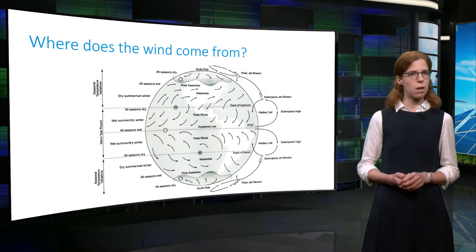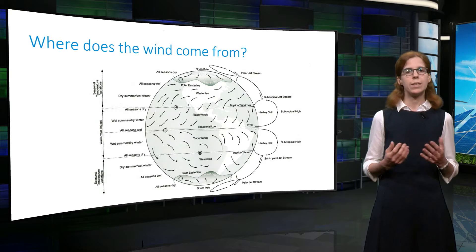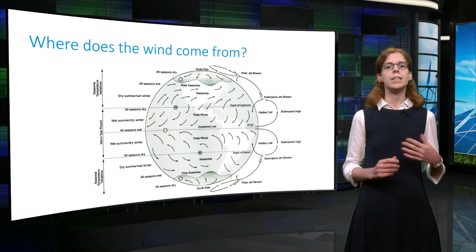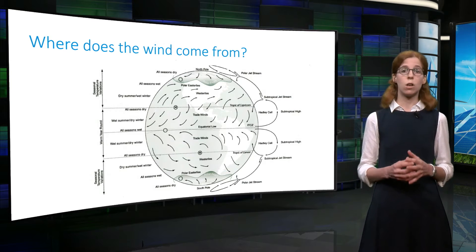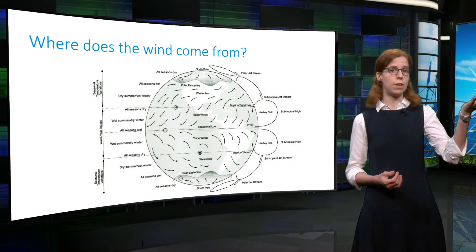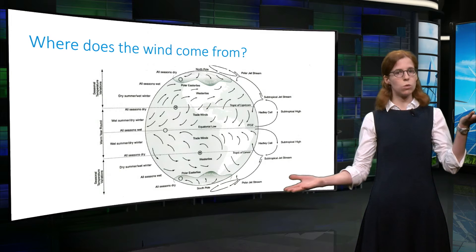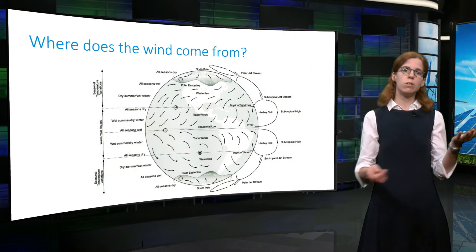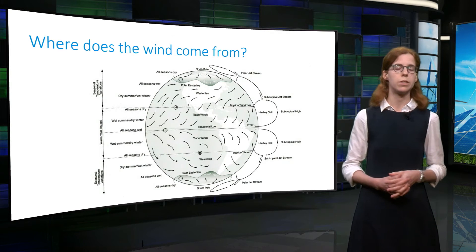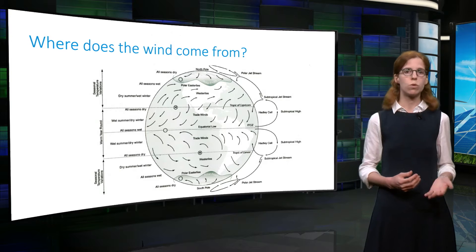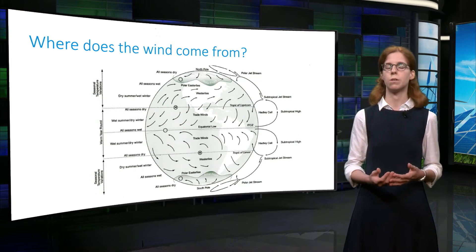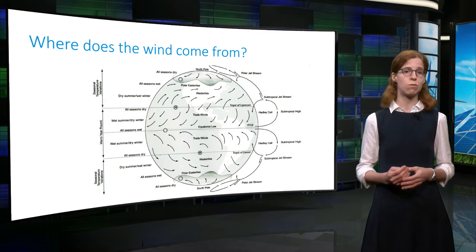But where does the wind come from? The Sun heats the Earth differently at different locations. This creates temperature gradients across the globe. Hot air tends to rise in the atmosphere, while cold air tends to fall towards the ground. This generates global recirculation of air between regions of different temperatures. These motions are of course influenced by additional factors, such as the Earth's rotation. But wind power does originate from the Sun.